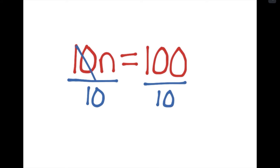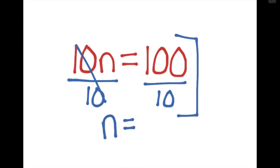These two 10s cancel each other out. On this side, I'm left with n, and your calculator would go 100 divided by 10, and that equals 10.